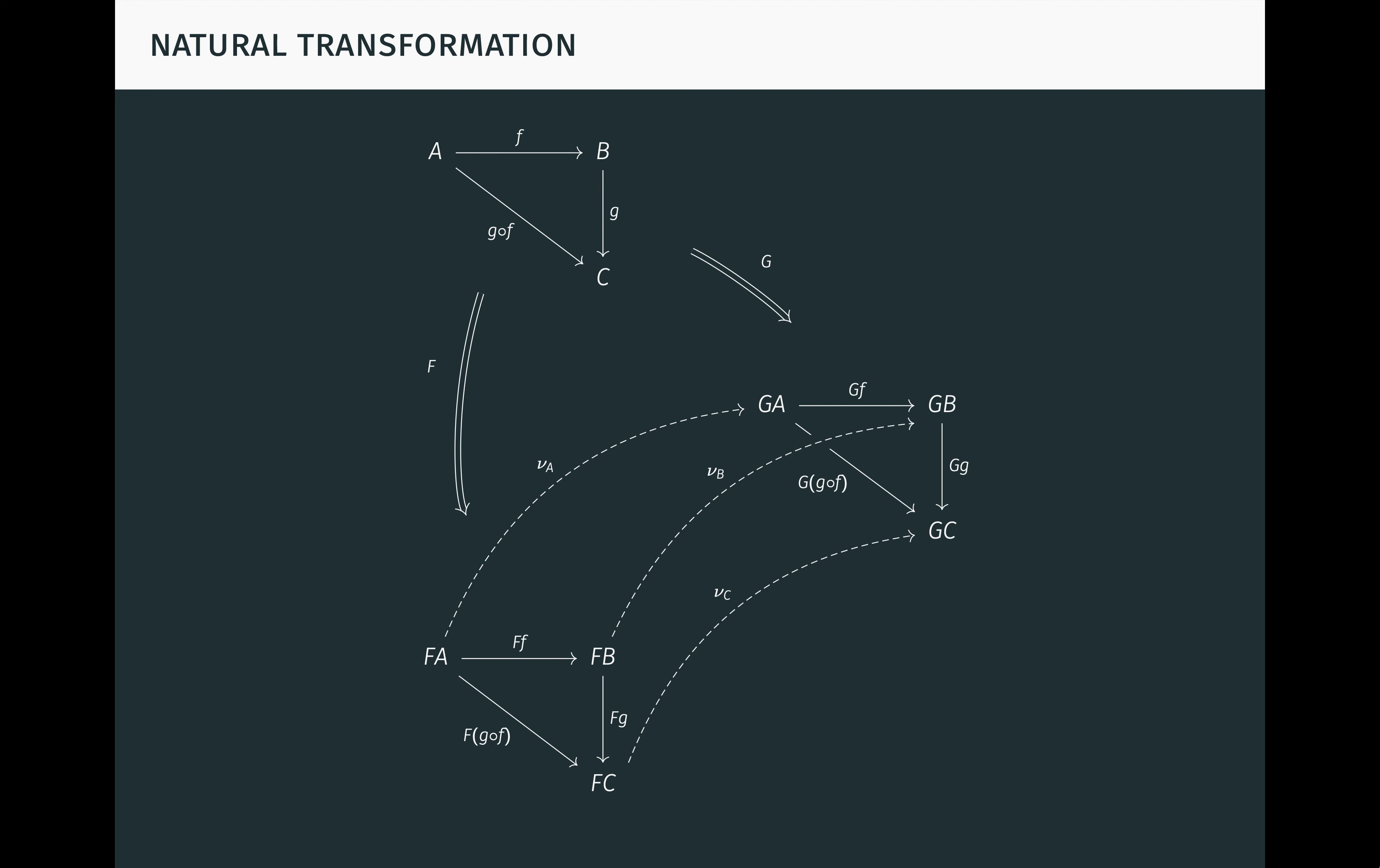Here's what a natural transformation looks like visually. On top we have a familiar commutative triangle in the category C. The functors F and G, here denoted by double arrows, create image triangles in the category D at bottom. The natural transformation nu is the family of dashed arrows relating the two triangles. It creates a cylinder or prism, each face of which is a commutative square.